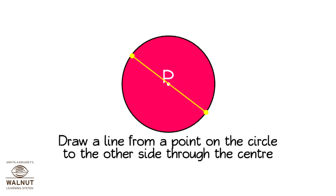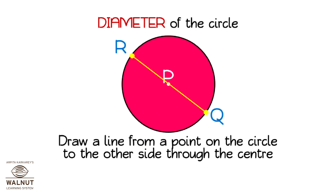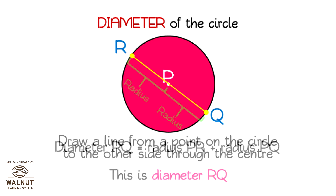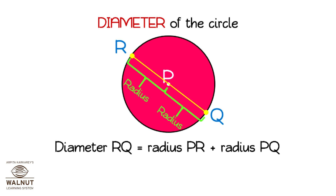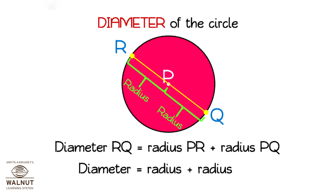Draw a line from a point on the circle to the other side through the center. This is called the diameter of the circle. This is diameter RQ. Diameter RQ connects two points on the circle, R and Q, and also passes through the center P. The diameter is made up of two radii, PR and PQ.